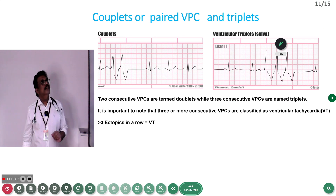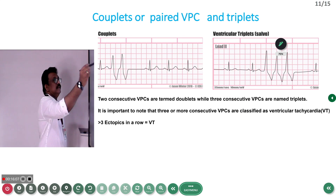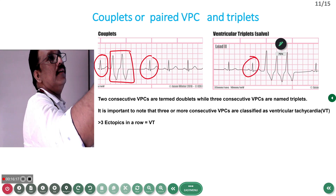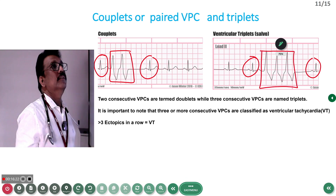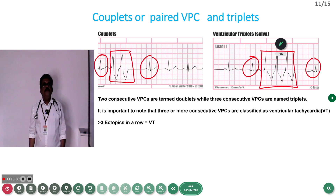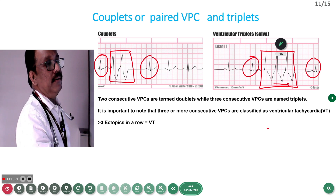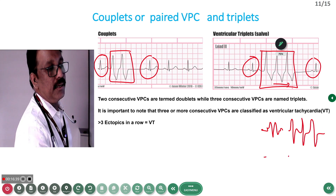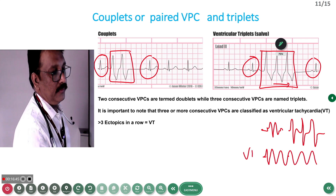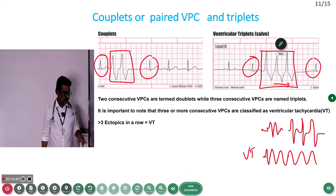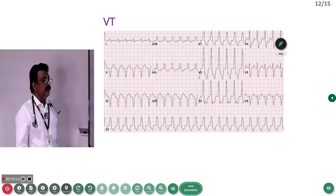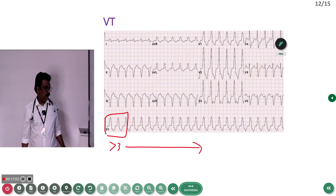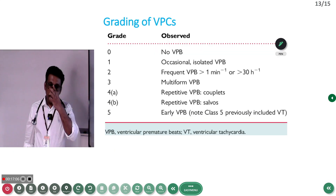Trigeminy means two normal complexes then one ectopic; quadrigeminy means four normal complexes then one ectopic. These are all dangerous patterns. Couplets are paired VPCs — two ectopics coming in a row after a normal complex. Triplets are three ectopics coming in a row. Triplets are dangerous because in time they can increase from three to more than three and become ventricular tachycardia.